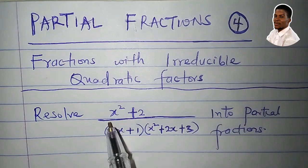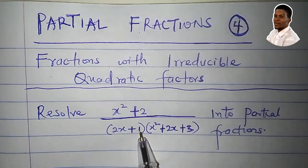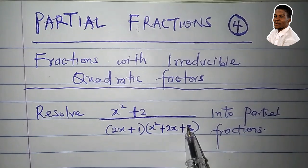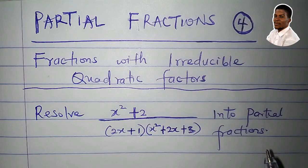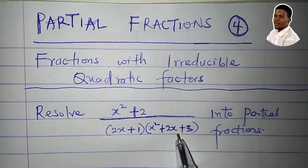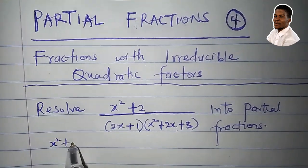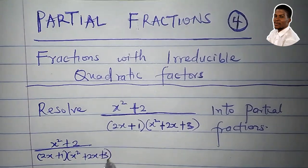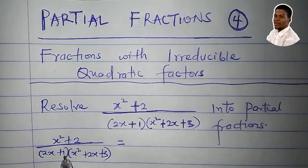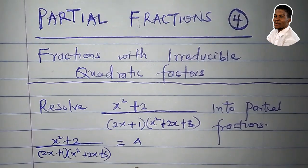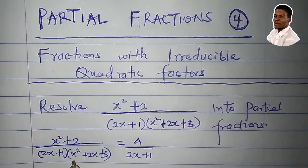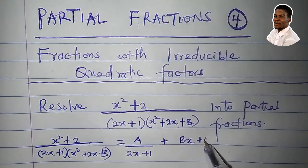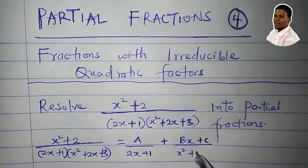Now, we want to resolve (x²+2) over (2x+1)(x²+2x+3). Here, 2x+1 is a linear factor, and x²+2x+3 is quadratic and irreducible — it cannot be factorized. So the decomposition will be: (x²+2) / [(2x+1)(x²+2x+3)] = A/(2x+1) + (bx+c)/(x²+2x+3).